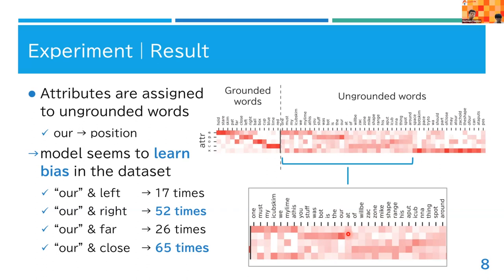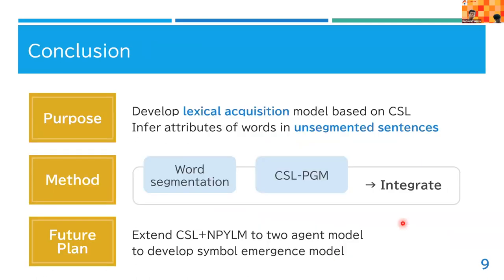In conclusion, I developed a lexical acquisition model based on cross-situational learning. The future plan is to extend this one-agent model to a two-agent model for development of a symbol emergence model.